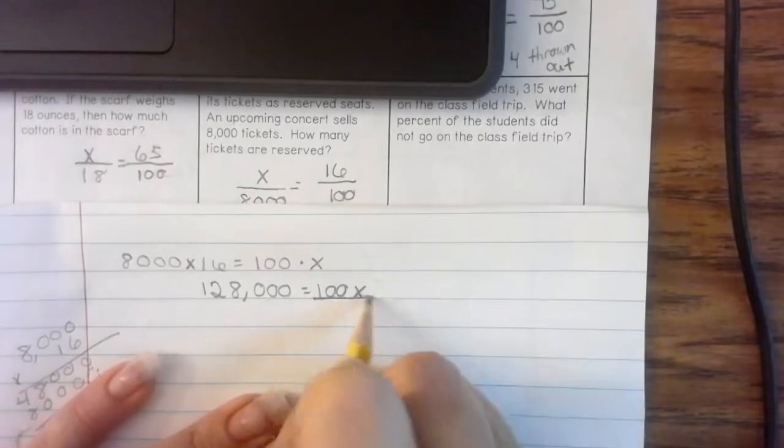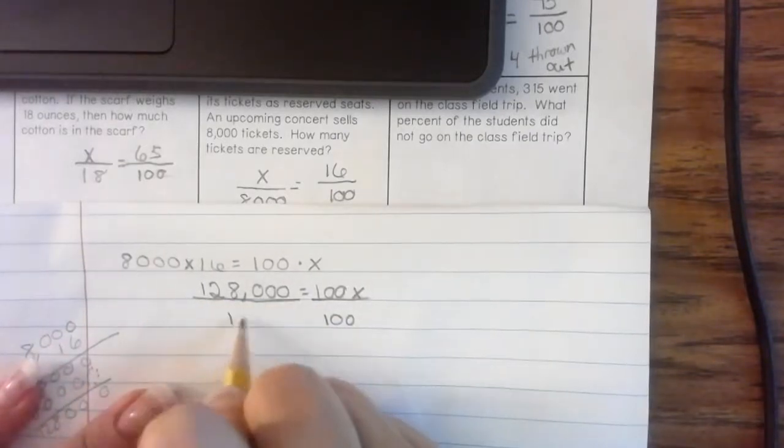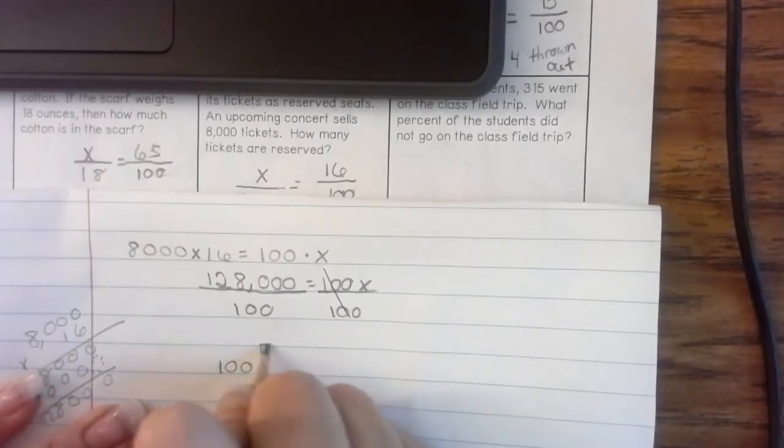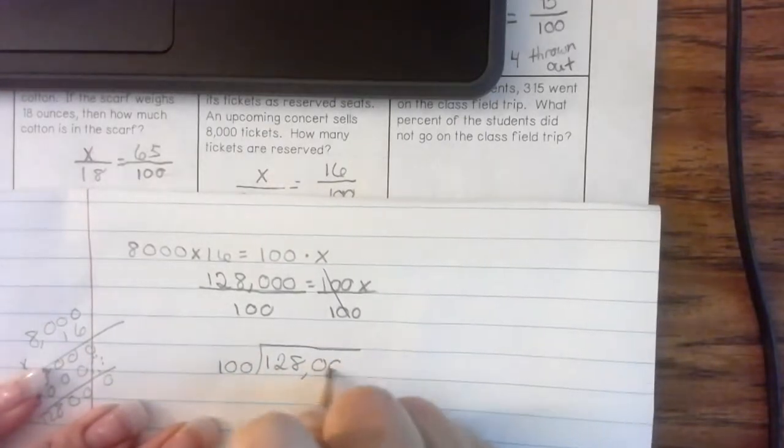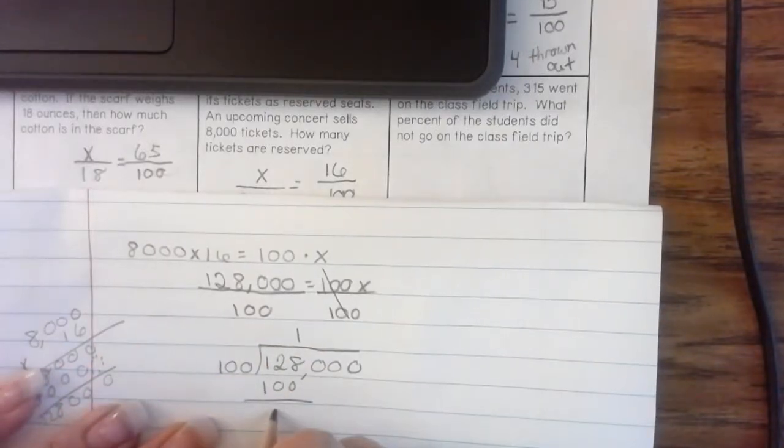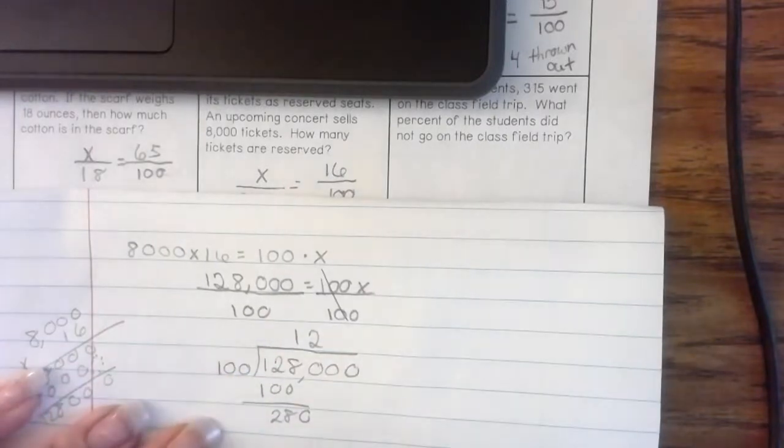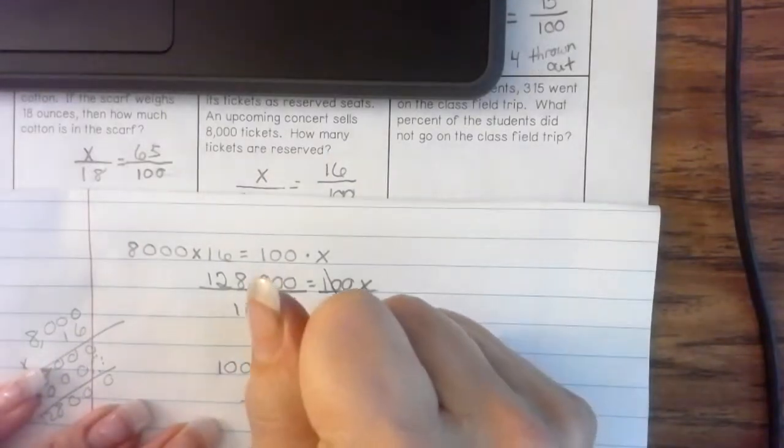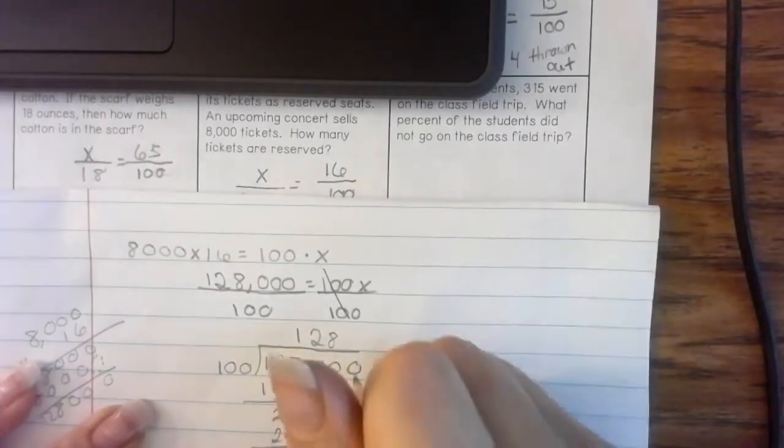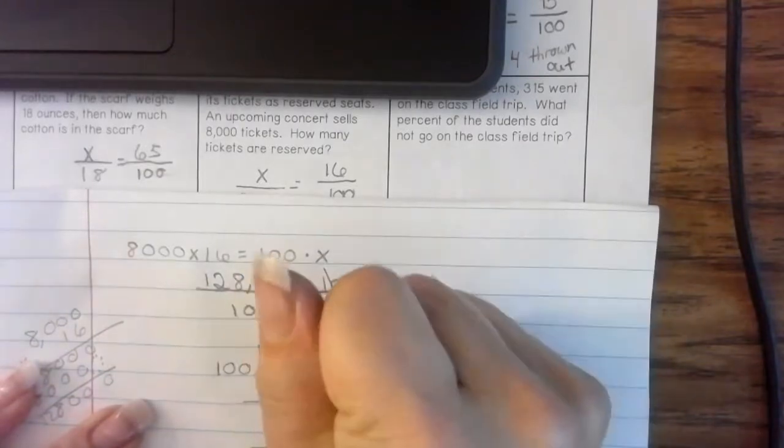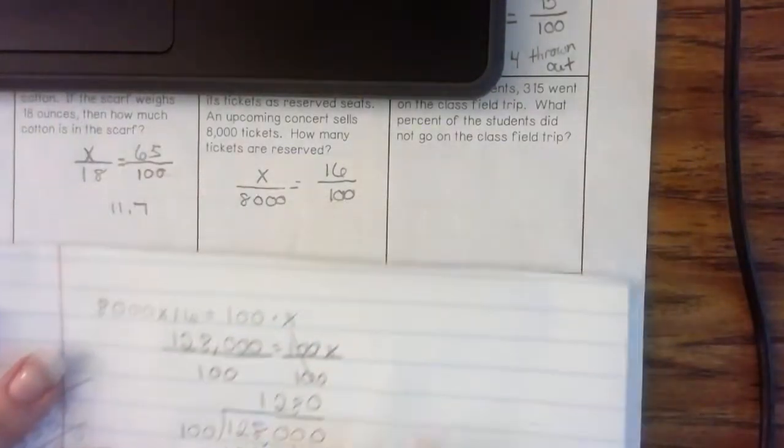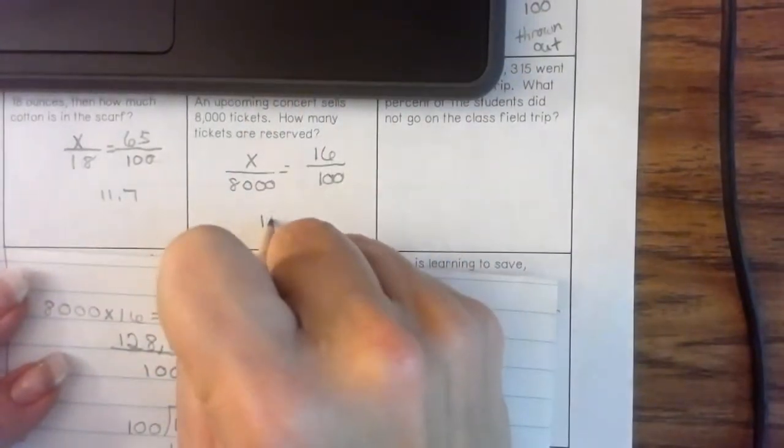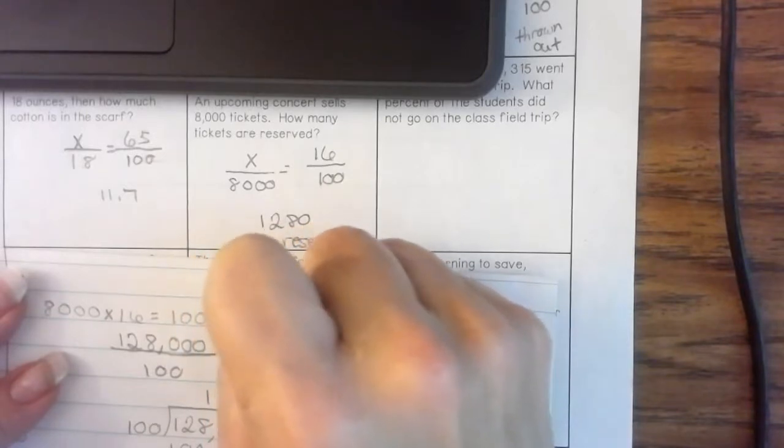I need to isolate that variable. So, I'm going to divide. 100 on the outside. 100 will go into 128 once. Go into 280 twice. And it'll go in 808 times. And it'll go into 0, 0 times. My answer is 1280. 1280 tickets were reserved.